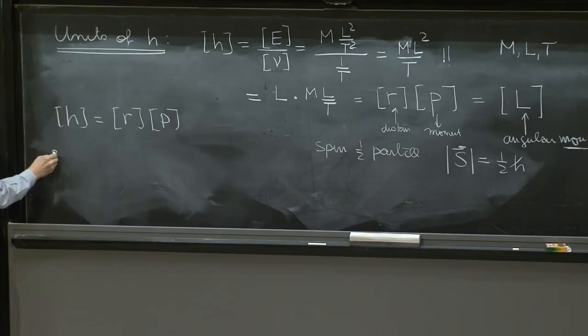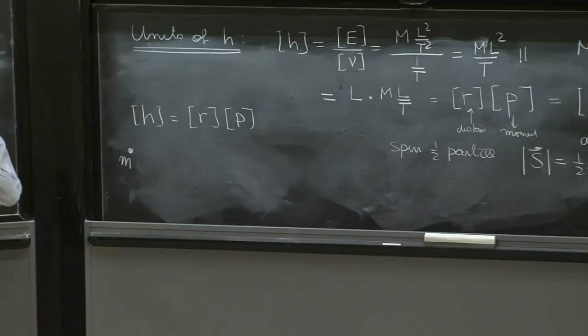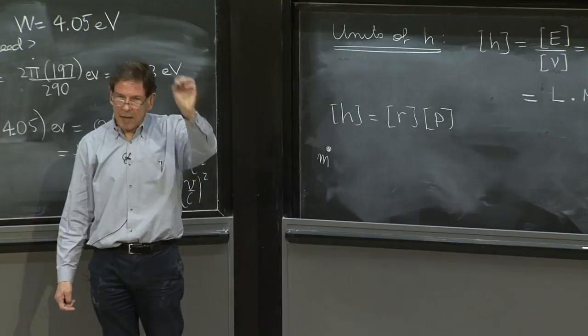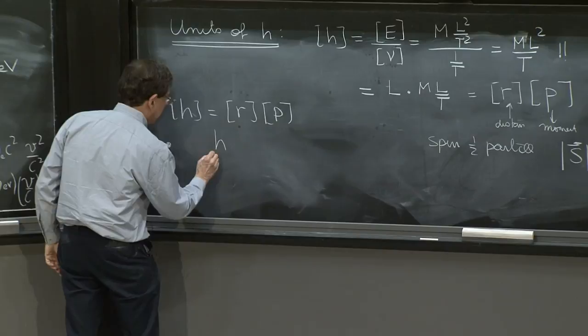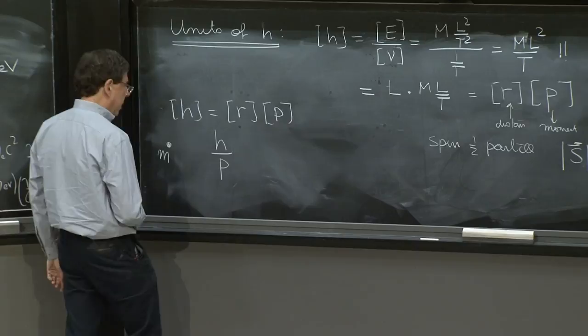h is proportional to rp and get an inspiration. So you can think h has units of r times p. And you can say, look, if I have any particle with mass m, I can now associate a length to it. I can invent a length associated to that particle. And how do I do it? Well, this has units of length. So all I have to do is take h and divide by p.